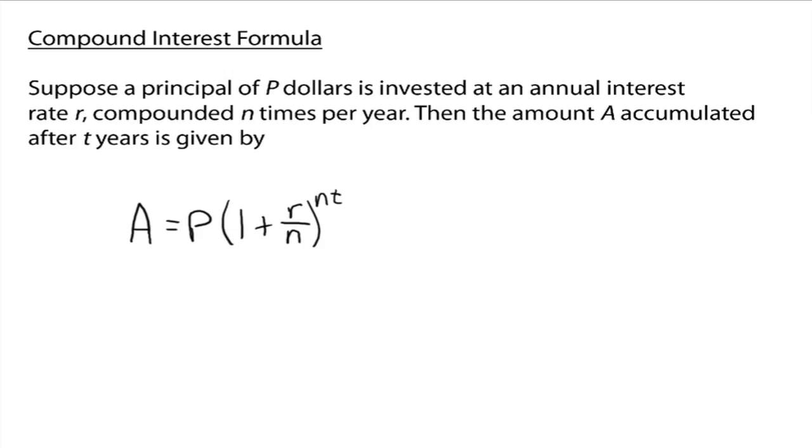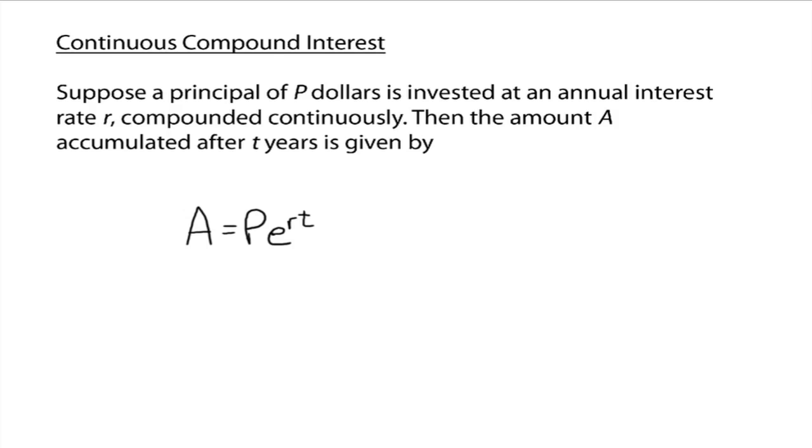Now there's one other type of interest, and it's called continuous compound interest. Now, continuous compound interest means that you're compounding continuously. The interest is being compounded and added into your account continuously. Now in reality, that doesn't happen. If you do happen to find a bank that does continuously compound your interest, please let me know so I can put my money there. Now, why are we talking about it then if this doesn't really exist?